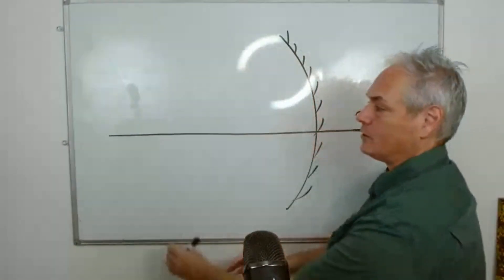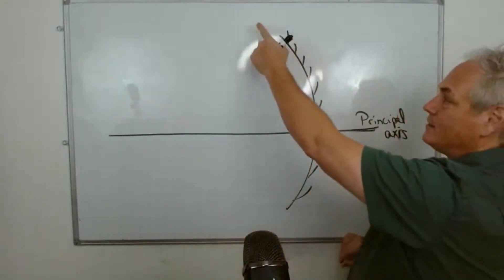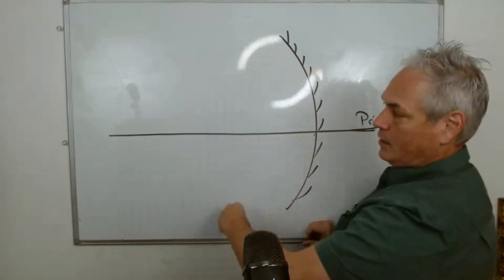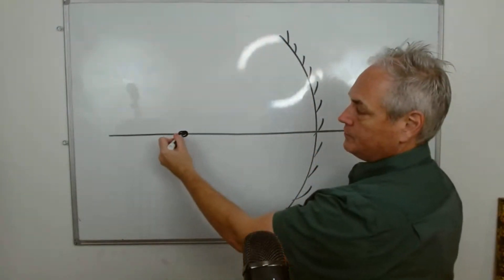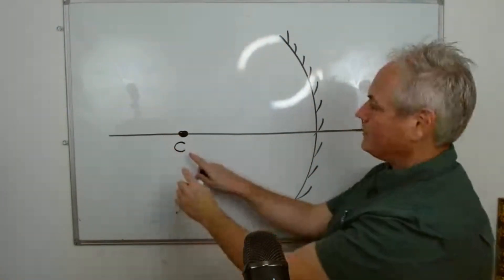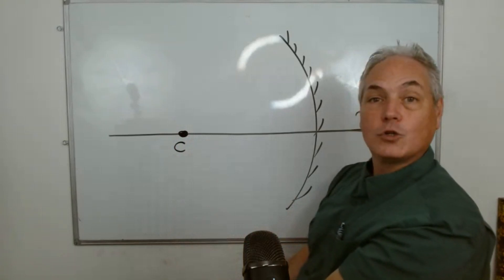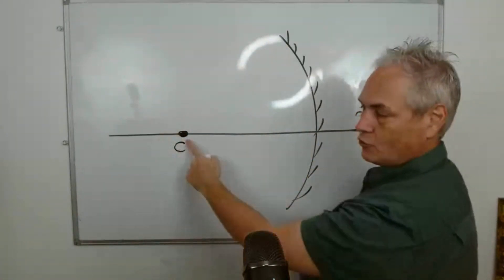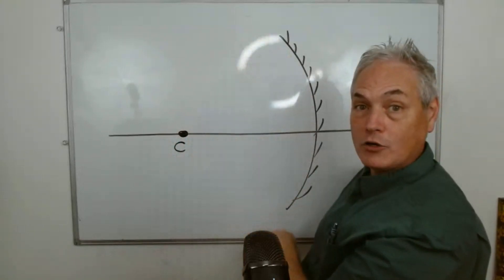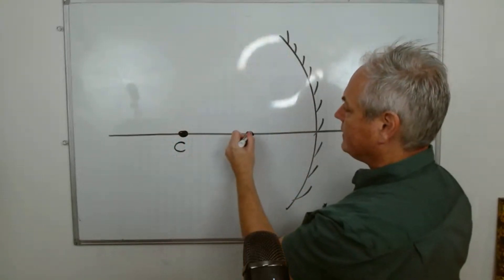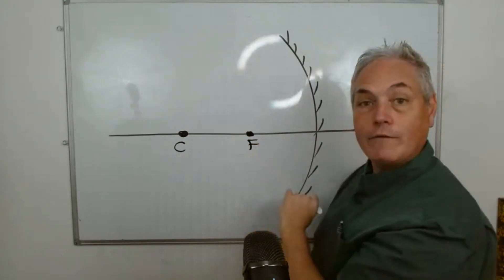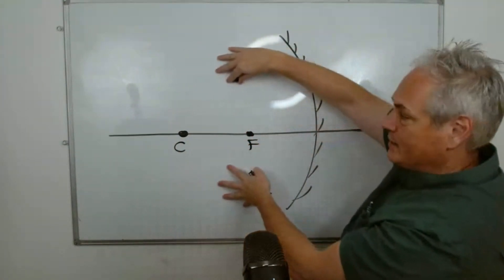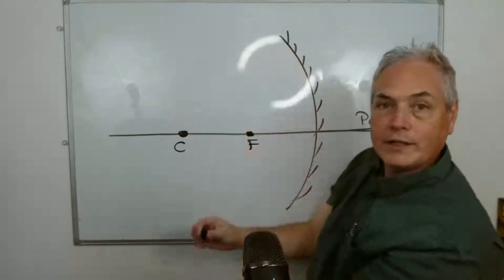Let's look at our mirror. Here we have a principal axis and a concave mirror. The curvature of our mirror has a point C. Think of a bicycle wheel and the spoke — the center of curvature dictates how curved your mirror is. In the middle, you have a focal point where all the rays, if parallel, will focus on one point.